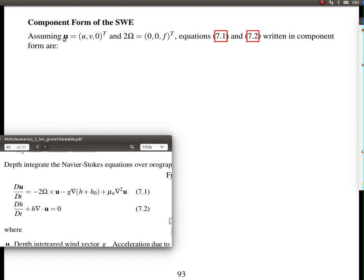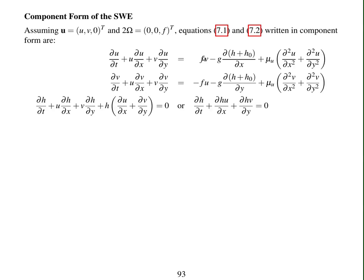If you assume that the velocity vector is in components u and v, two components, and the Coriolis just has one component in the other direction, then we can write the shallow water equations in component form, which is a tedious job which I've done here for you. And the reason I've done this is that then it makes it easier to linearise these equations.